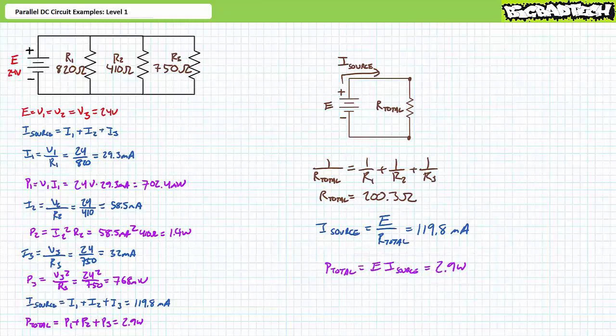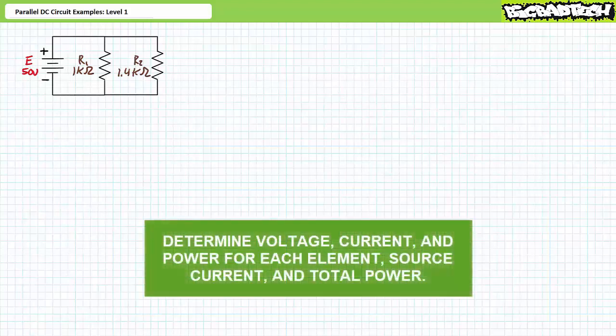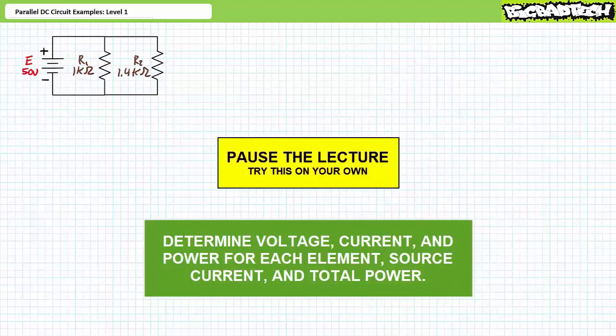I've got a reasonable degree of confidence our answers are correct. Our next illustrated example features a 50-volt source in parallel with R1 (1 kilohm) and R2 (1.4 kilohms). We're again asked to solve for voltage drop, current, and power for each element, the source current, and the total power. Pause the lecture and try this on your own. If you're tracking, you should have obtained the following results.